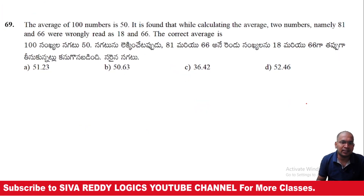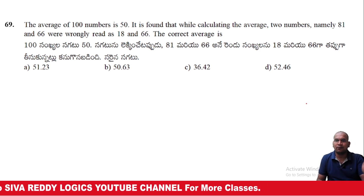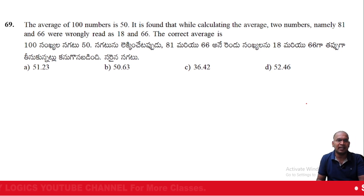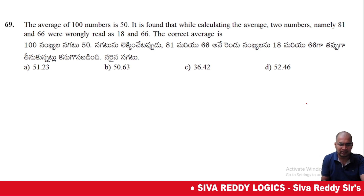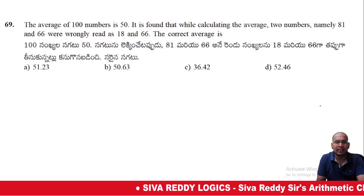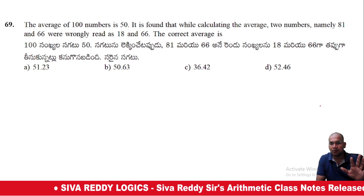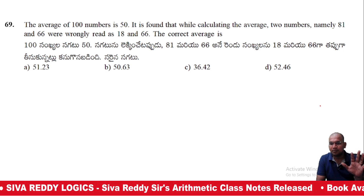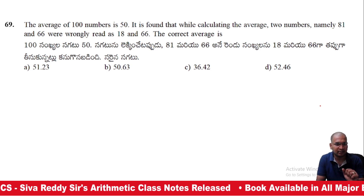Fifth question: the average of 100 numbers is 50. It was found that while calculating the average, two numbers namely 81 and 66 were wrongly read as 89 and 66. Find the correct average.